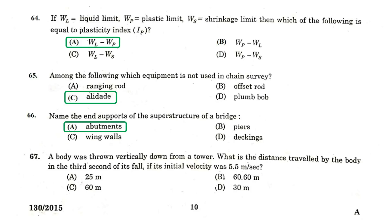A body was thrown vertically down from a tower. What is the distance travelled by the body in the third second of its fall if its initial velocity was 5.5 m per second? 30 m.